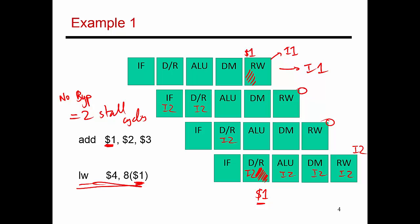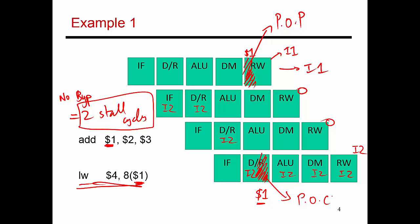In the next few slides I'll go through two other examples, and the results will also be two stall cycles. That's because when you don't have bypassing, the point of production — when a value can be consumed — is always in the first half of the register write stage. The consumer always reads in the register read stage. So we line up the two instructions so the point of consumption happens right after the point of production. That's the shortest gap, meaning I need to stall I2 by two cycles. Without bypassing, regardless of instruction type, you always have this two-cycle gap.